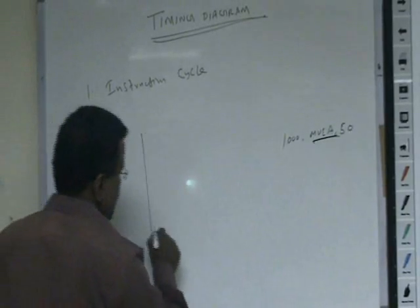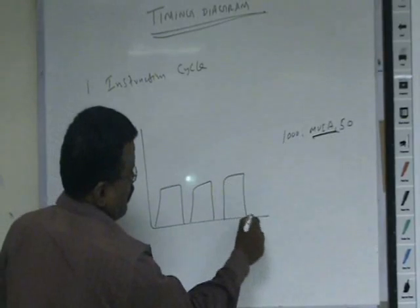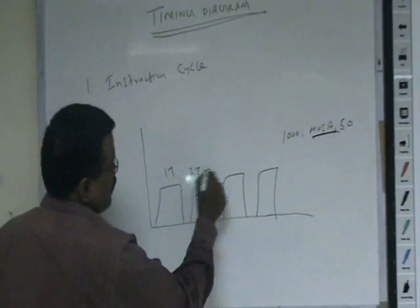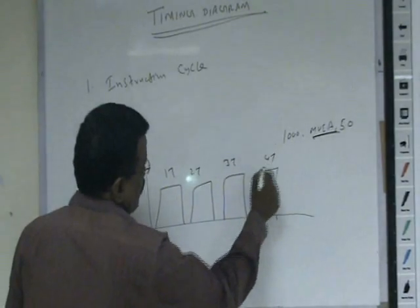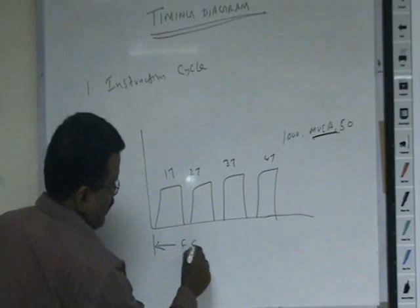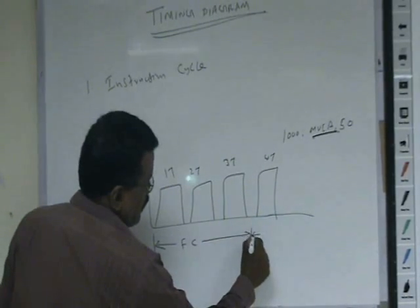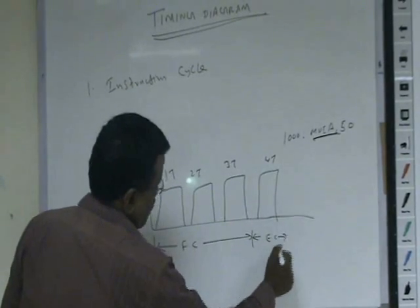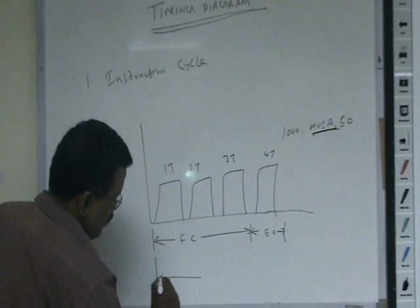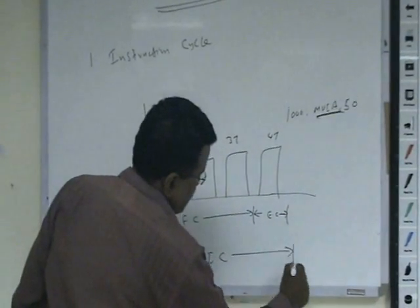In a microprocessor, we have T-states: T1, T2, T3, and T4. This is what they call the fetch cycle — it requires 3 T-states, and 1 T-state is required for executing that instruction. So as a whole, the time taken to execute one instruction is called the instruction cycle.